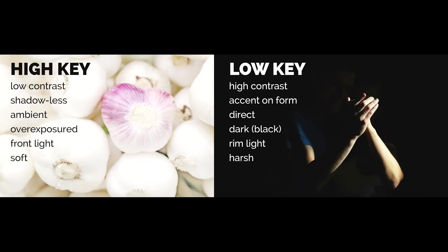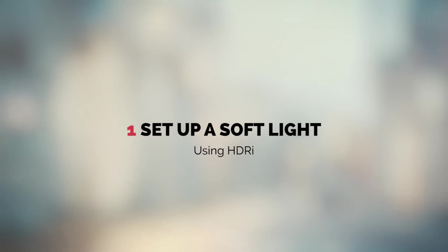And low-key lighting is the exact opposite. It is a very dark, almost black picture. It has a very high contrast between lit and dark areas. The lighting is very hard with sharp shadows. And if high-key lighting is usually accomplished using a front light, low-key lighting uses rim light, edge light, or side lighting.